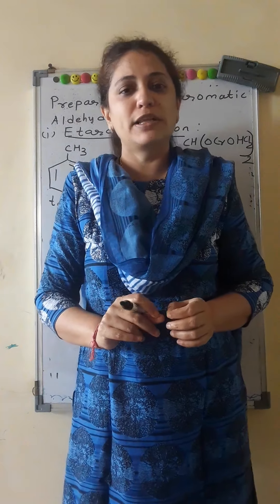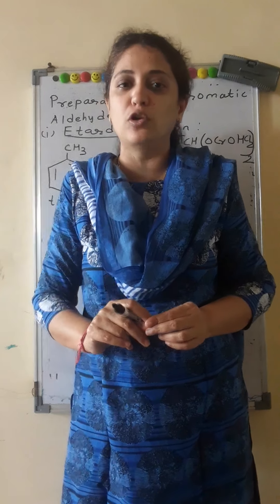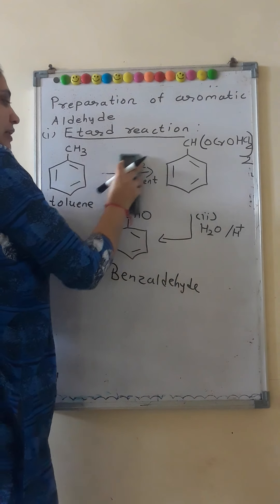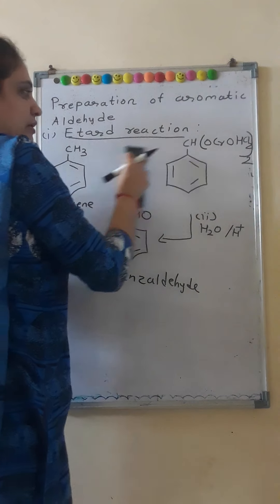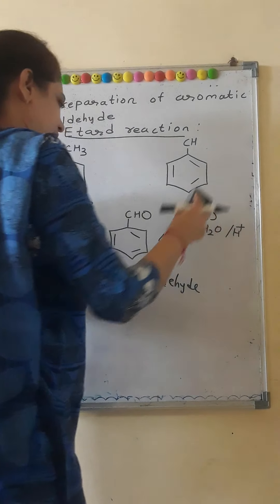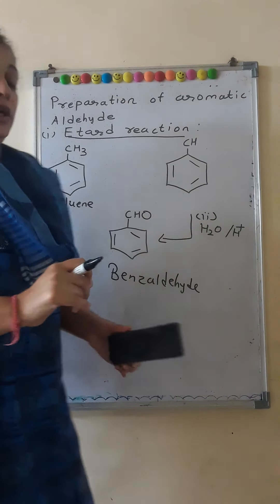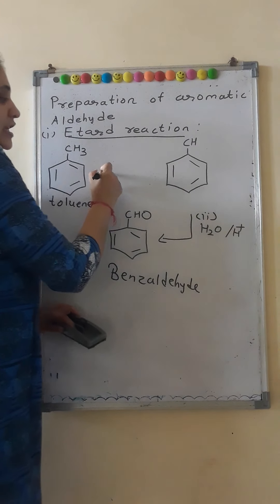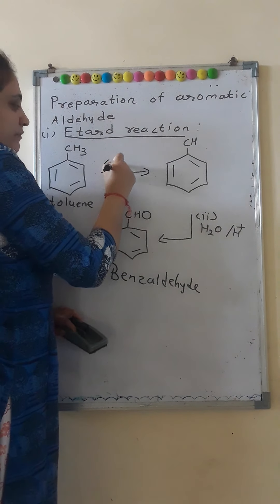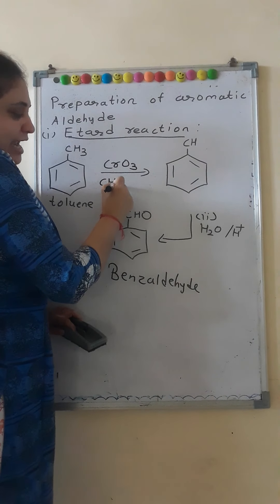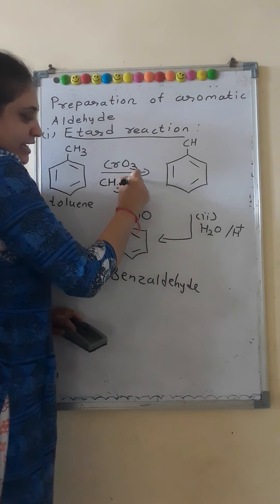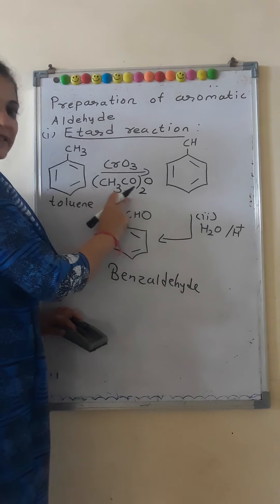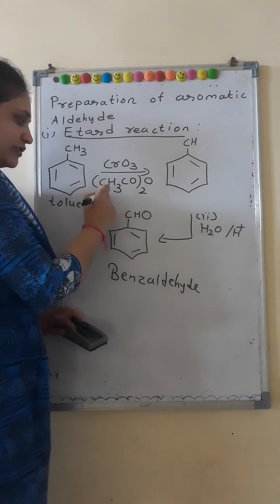The second method — once again our starting compound is toluene, but the reagent will be changed. In this method, the reagent is acetic anhydride in the presence of CrO₂. Acetic anhydride is written as (CH₃CO)₂O. This is the main reagent.